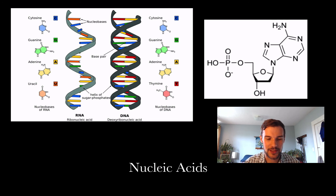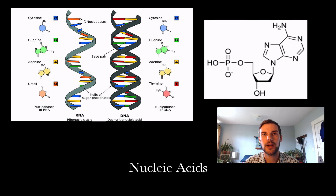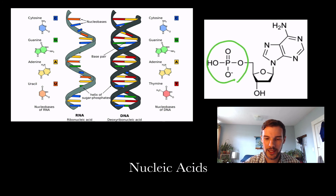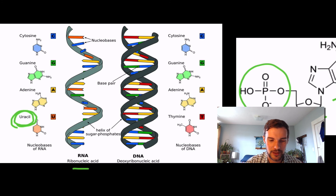The last macromolecule is nucleic acids — DNA and RNA — which make up our genetic code. That genetic code codes for protein synthesis, the creation of proteins in our body. A nucleotide has a phosphate group, a nitrogenous base, and a sugar. Uracil is a nitrogenous base found in RNA; the major difference between RNA and DNA is that DNA uses thymine instead of uracil.